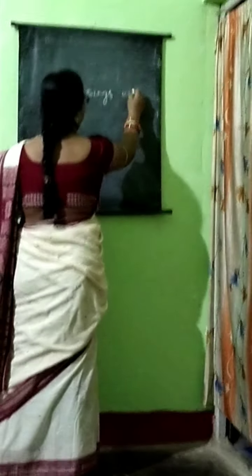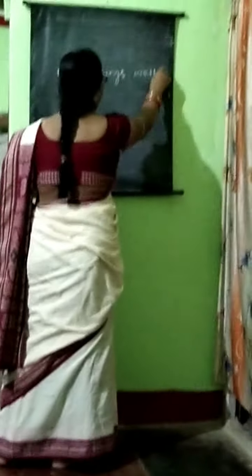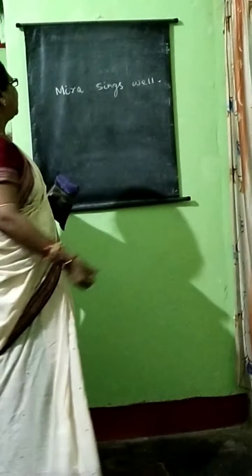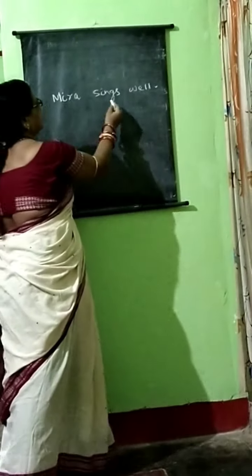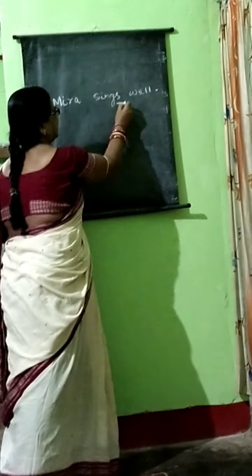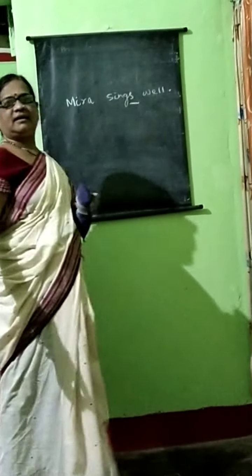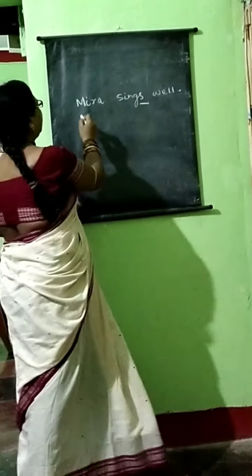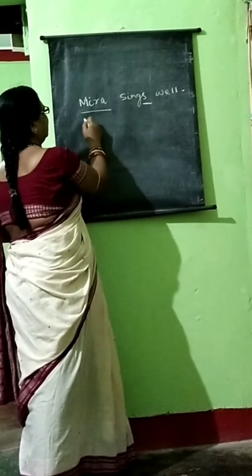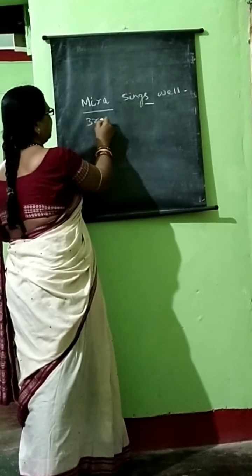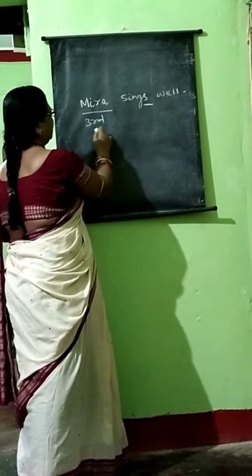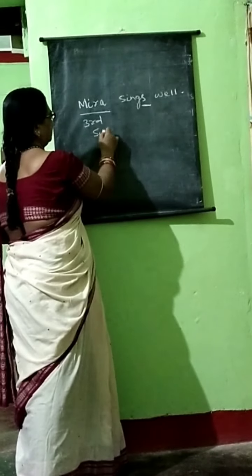Mira sings well. Why does 'sing' take an 'S'? Because Mira is third person singular number, so the verb takes an 'S'.